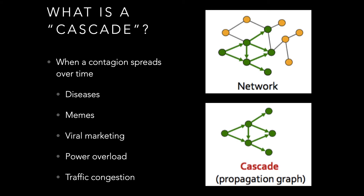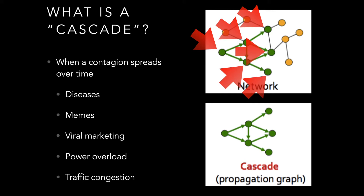When we refer to the cascade, we're talking specifically about the spread in the graph — what parts of the graph are infected by the contagion, or influenced by a particular contagion, rather than the whole graph. The idea is you have some initial point of infection or some initial early adopter, and that behavior or contagion spreads through the network over time.